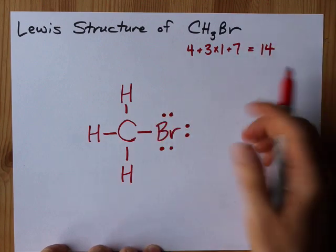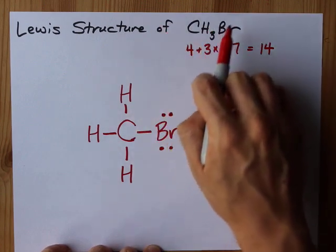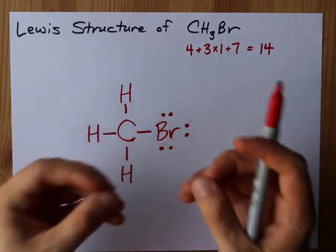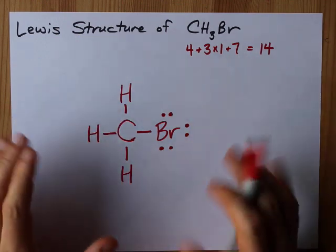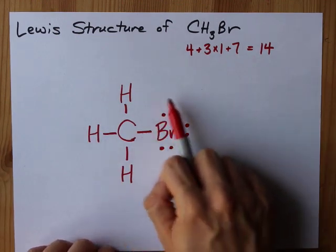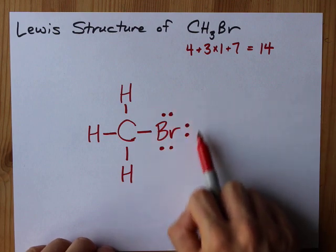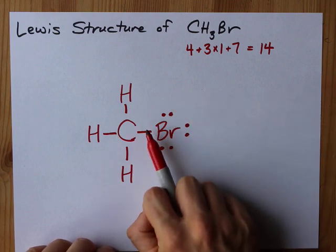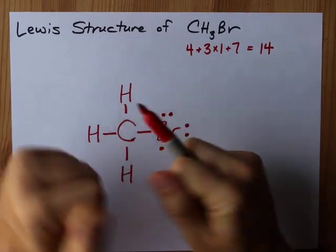I'm not allowed to put any more electrons because carbon, 3 hydrogens, and bromine only brings 14 total. But I'm in luck. Bromine has 8 electrons around it. 6 dots, and then the 2 that are represented in this bond makes 8. Yes.